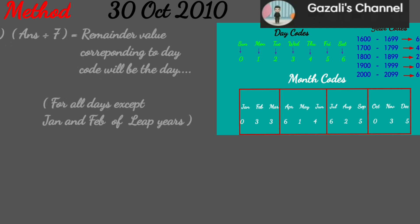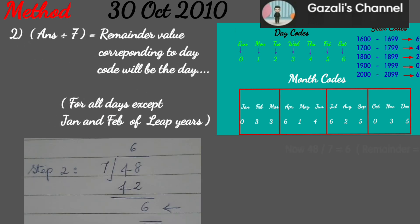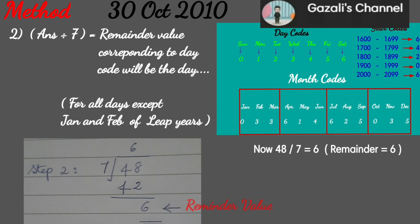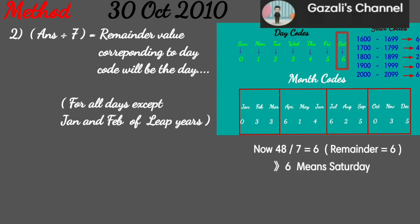Step 2: answer divided by 7. 48 divided by 7 — the remainder is 6. What day? Remainder 6 is Saturday. So 30 October 2010 is Saturday.